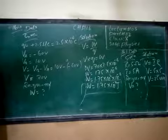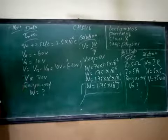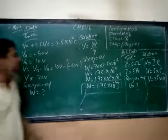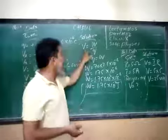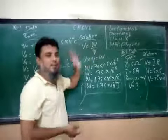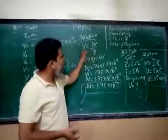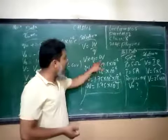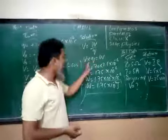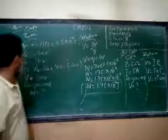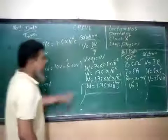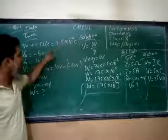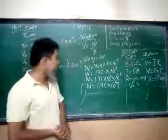Potential difference V equals W upon Q. So W equals V times Q. The potential difference between B and A is 70 volts. The charge Q is 2.5 times 10 to the power minus 6. So W equals 70 times 2.5 times 10 to the power minus 6.